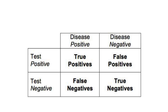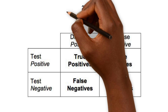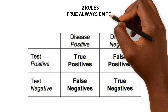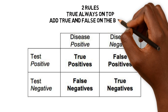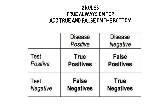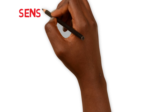For any diagnostic evaluation, you have this box here, where disease positive is on top, disease negative below, and then test positive and test negative are on the y-axis. Two rules: true is always on top — true prevails — and the second rule is to add true and false on the bottom.